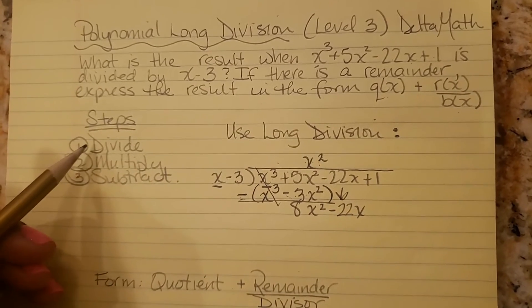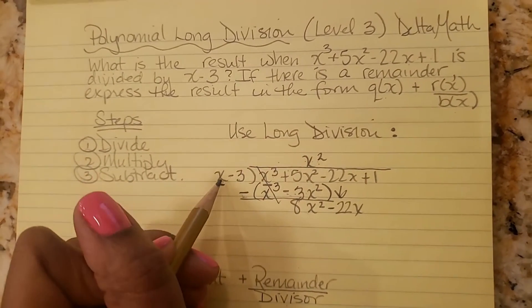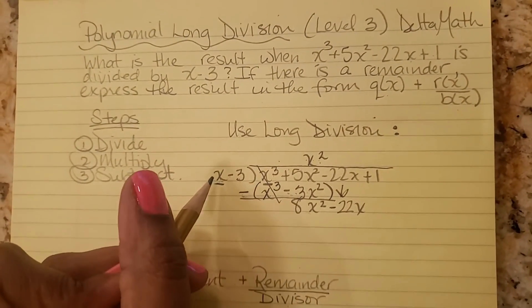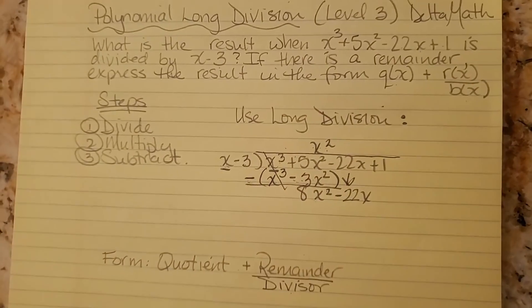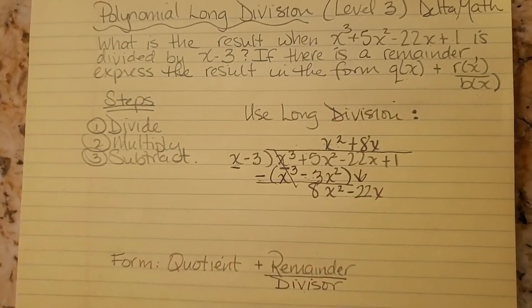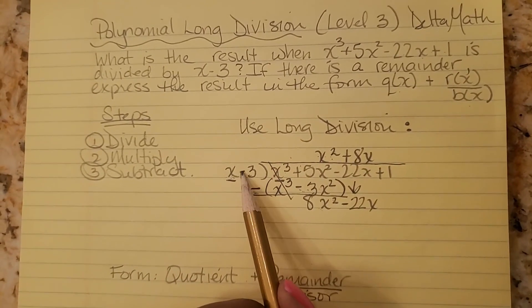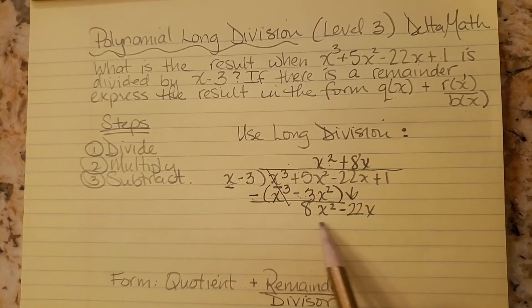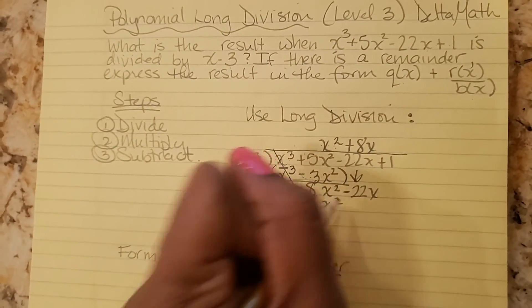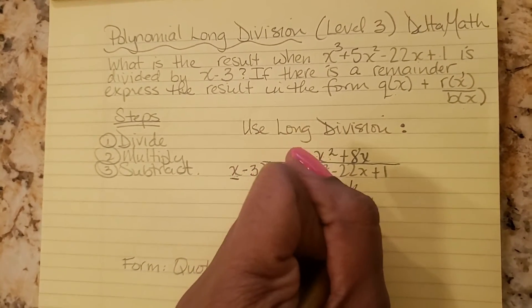And we repeat the process again. Start with division, the first term into the first term. So what is x into 8x squared? Or you can ask yourself, what do I have to multiply x by to get 8x squared? 8x. Good. So now we multiply 8x times this whole thing, x minus 3. So what is 8x times x minus 3? And write your product down here. So 8x times x is 8x squared. 8x times a negative 3 is negative 24x.